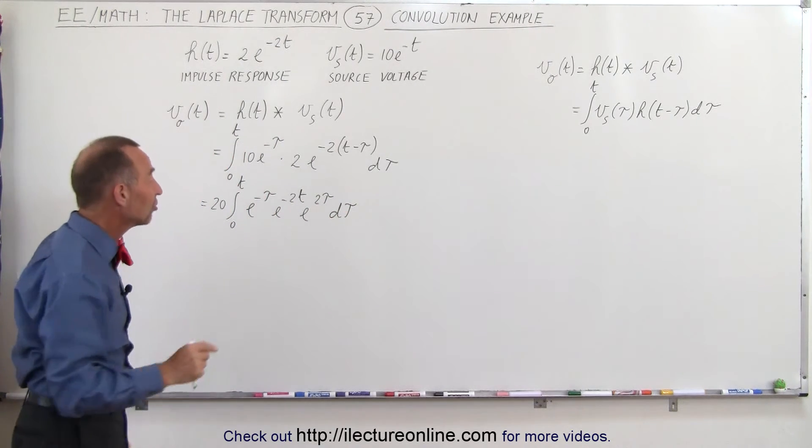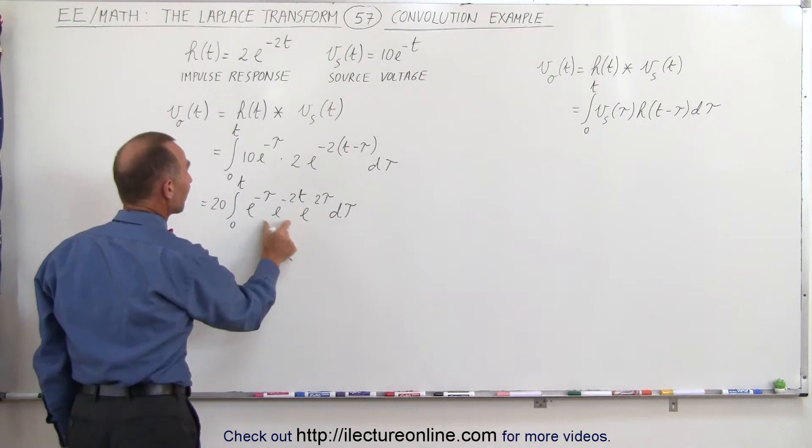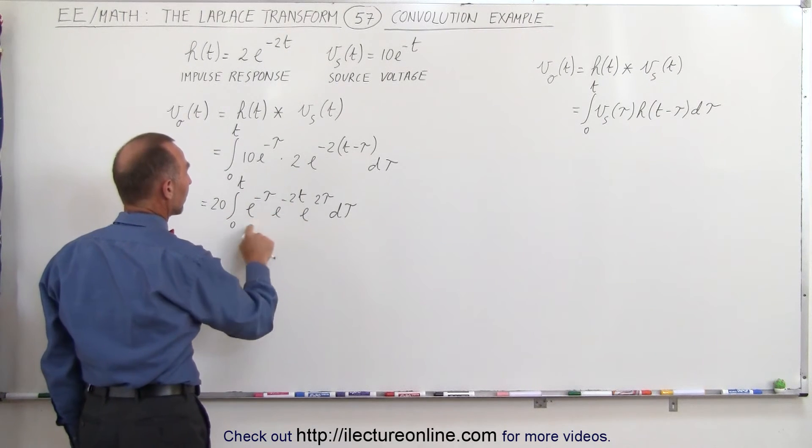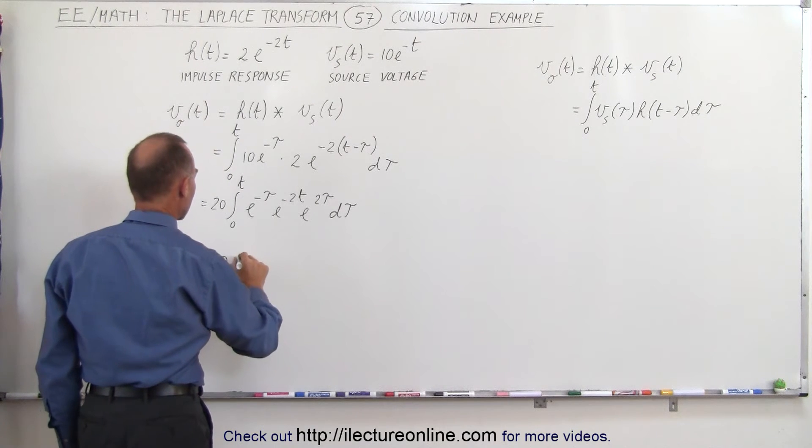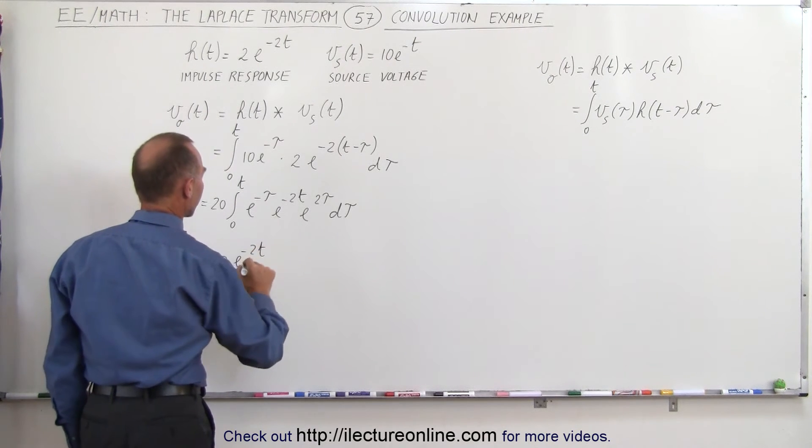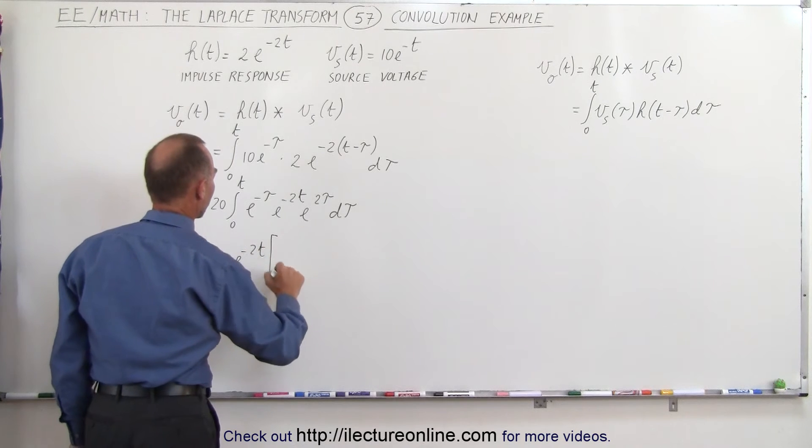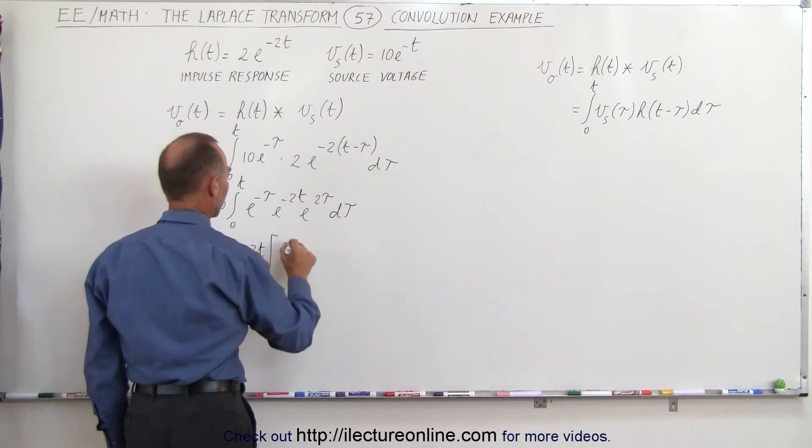Now remember that in this case, t is simply a constant that can be factored out, and then we can multiply these two together, which gives us 20 times e to the minus 2t times e to the minus tau.